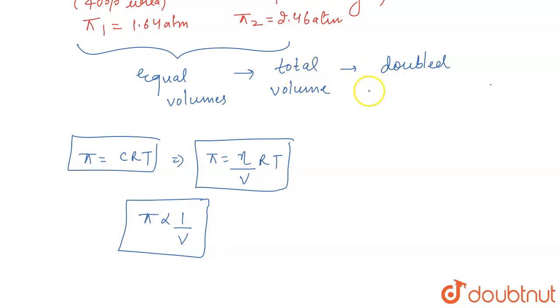So, as equal volumes are mixed, the total volume becomes double, which means that the total osmotic pressure, the total osmotic pressure is going to become half.